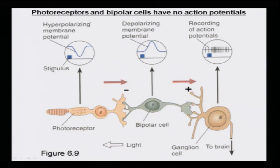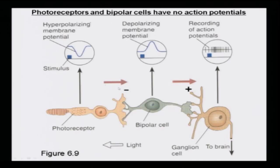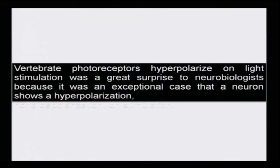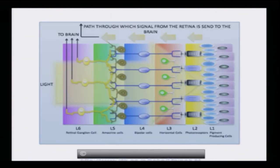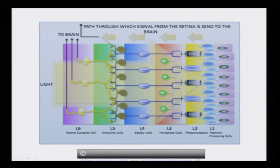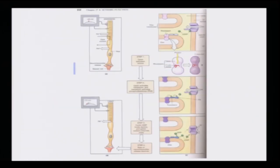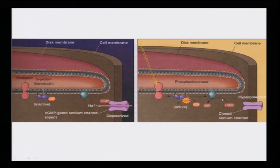This is how the signals are moving — please remember: photoreceptors and bipolar cells have no action potentials. Hyperpolarizing membrane potential leads to depolarization of bipolar cells, and then at the ganglion cell layer, all the processing takes place. All action potentials are generated at the L6 layer — the retinal ganglion cell layer. The phosphodiesterase is shown converting cyclic GMP into GMP, thereby closing the sodium channels. Phosphodiesterase remains quiet and is unable to act until activated by the transducin protein.